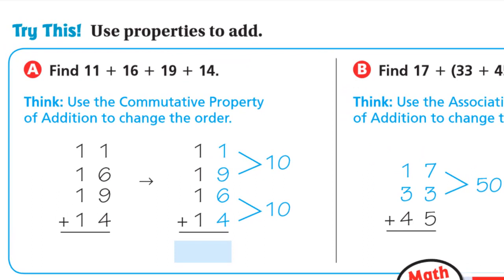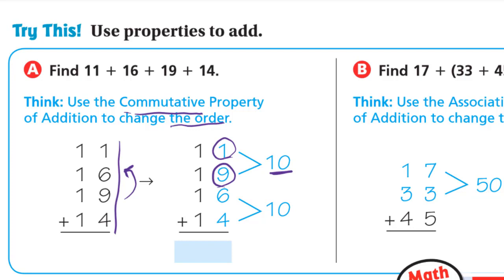Try this — Letter A: find 11 plus 16 plus 19 plus 14. Line up the numbers: 11, 16, 19, 14. Use the commutative property — change the order. Put 19 under 11, because 1 plus 9 equals 10. Then put 16 with 14, because 6 plus 4 also equals 10.